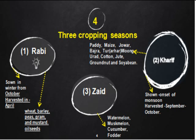Rabi crops are sown in the winter and harvested in the summer season from April onwards. Important Rabi crops are wheat, barley, peas, grams, and mustard seeds. North and northwest states like Punjab, Haryana, Himachal Pradesh, Jammu and Kashmir, Uttaranchal, and Uttar Pradesh are popular and important for the production of wheat and other Rabi crops.